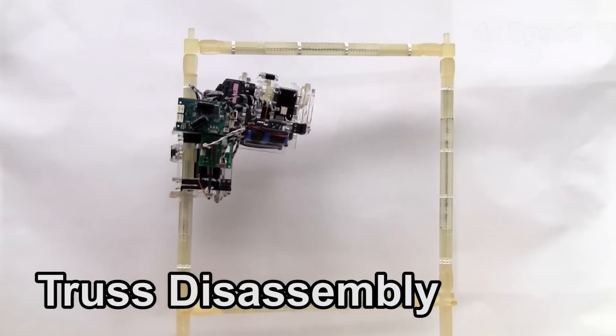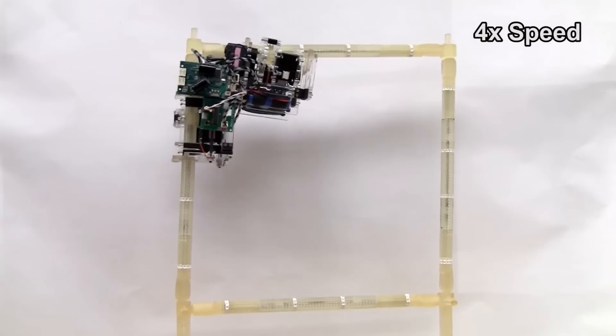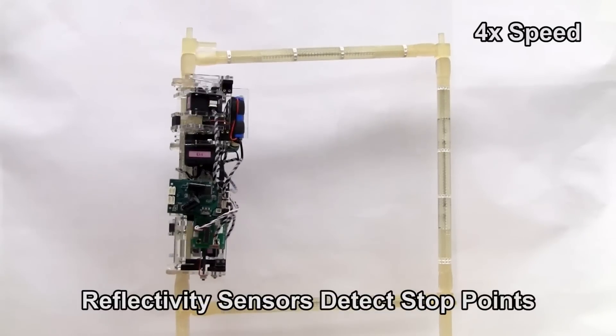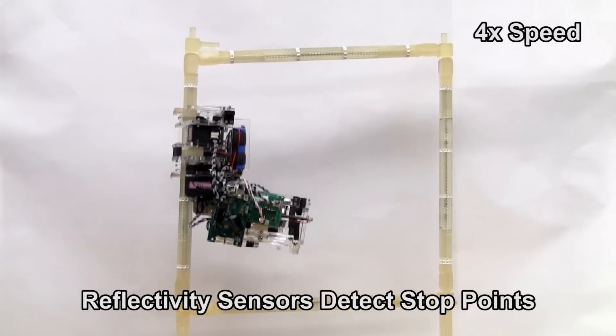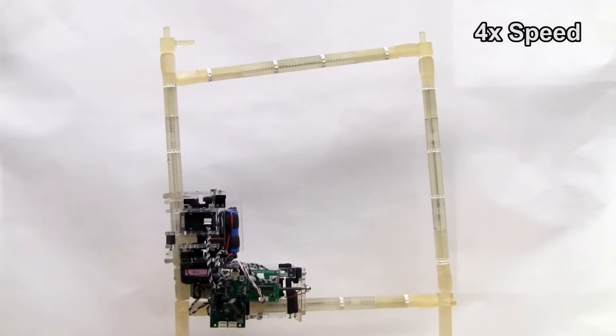Here we see version 2 of the robot successfully traversing and disassembling a vertical square structure. It uses reflectivity sensors on its base to identify the reflective lines shown in the video. This allows it to ascertain its relative position and therefore to autonomously move around and disassemble the structure.